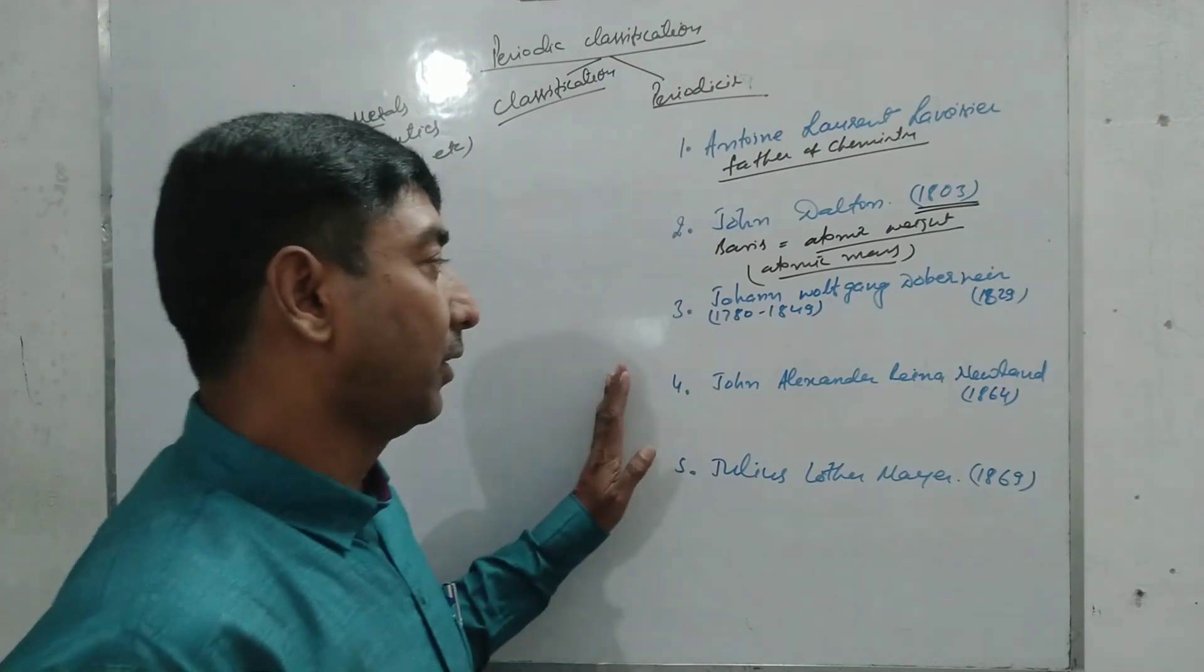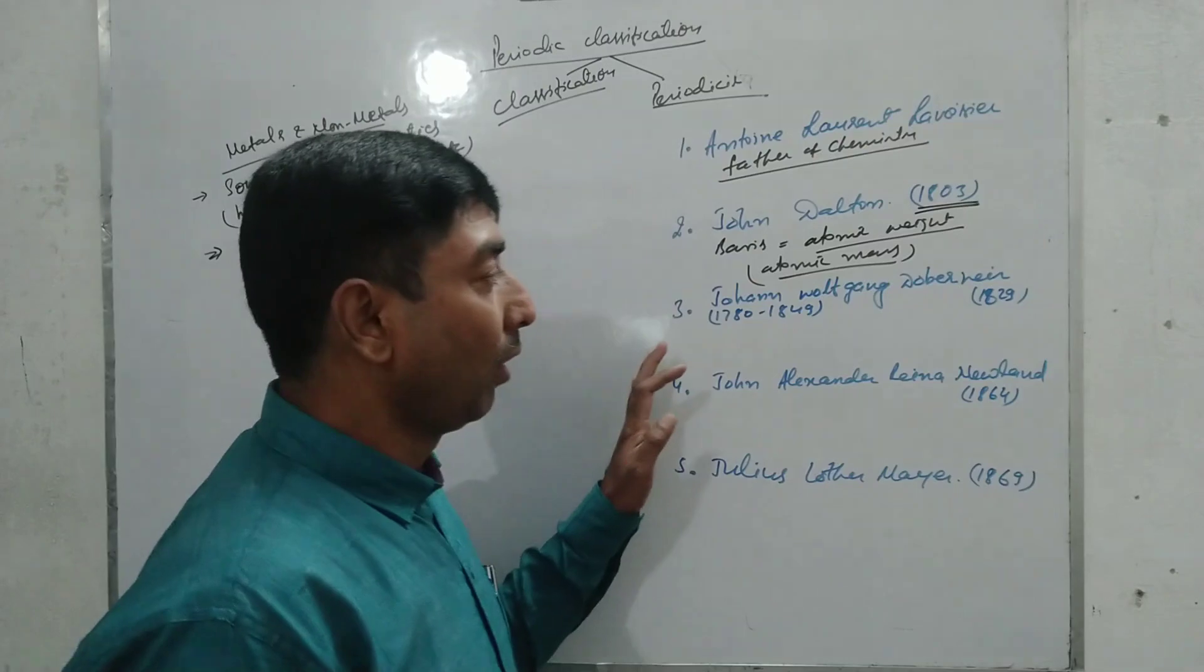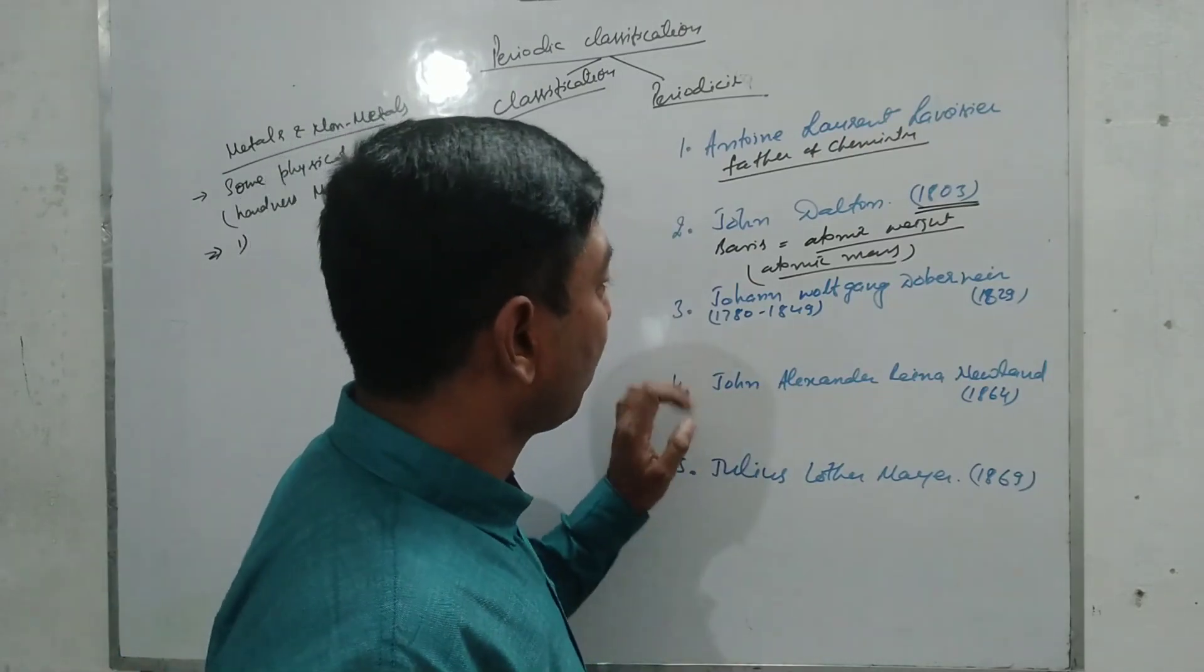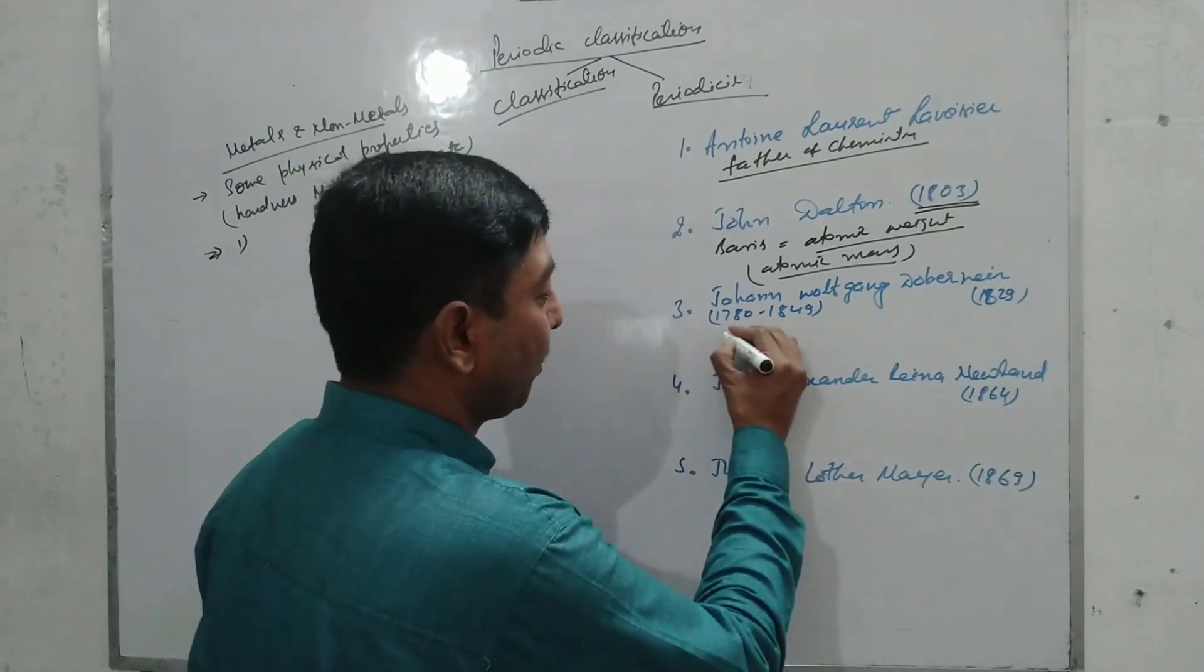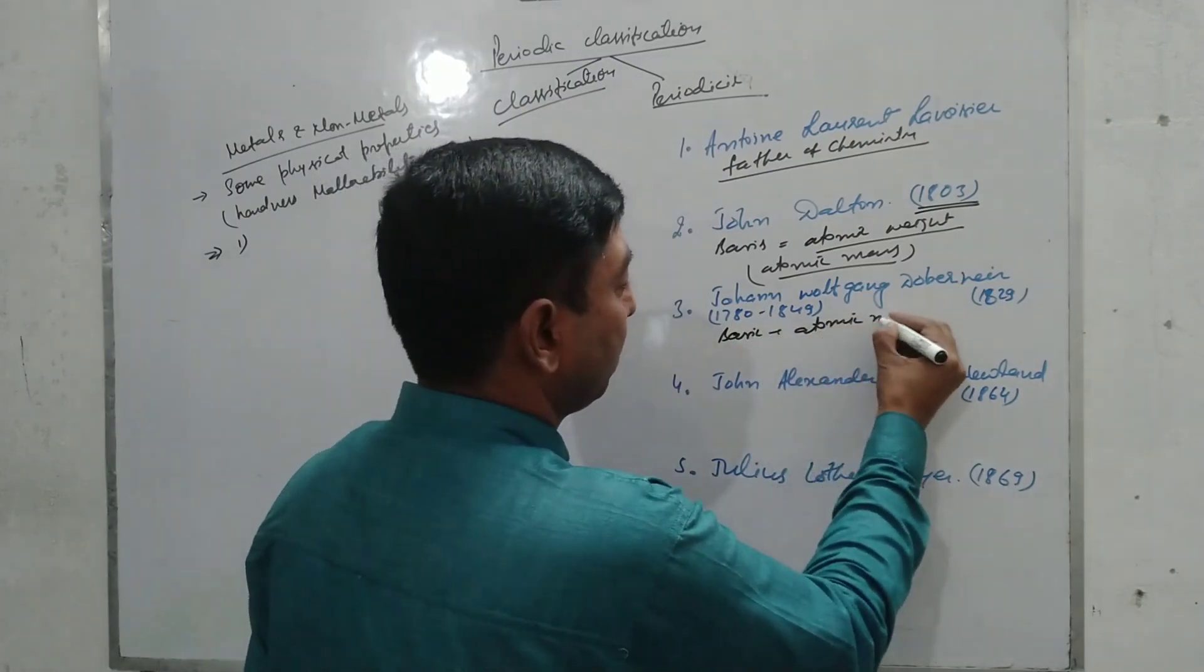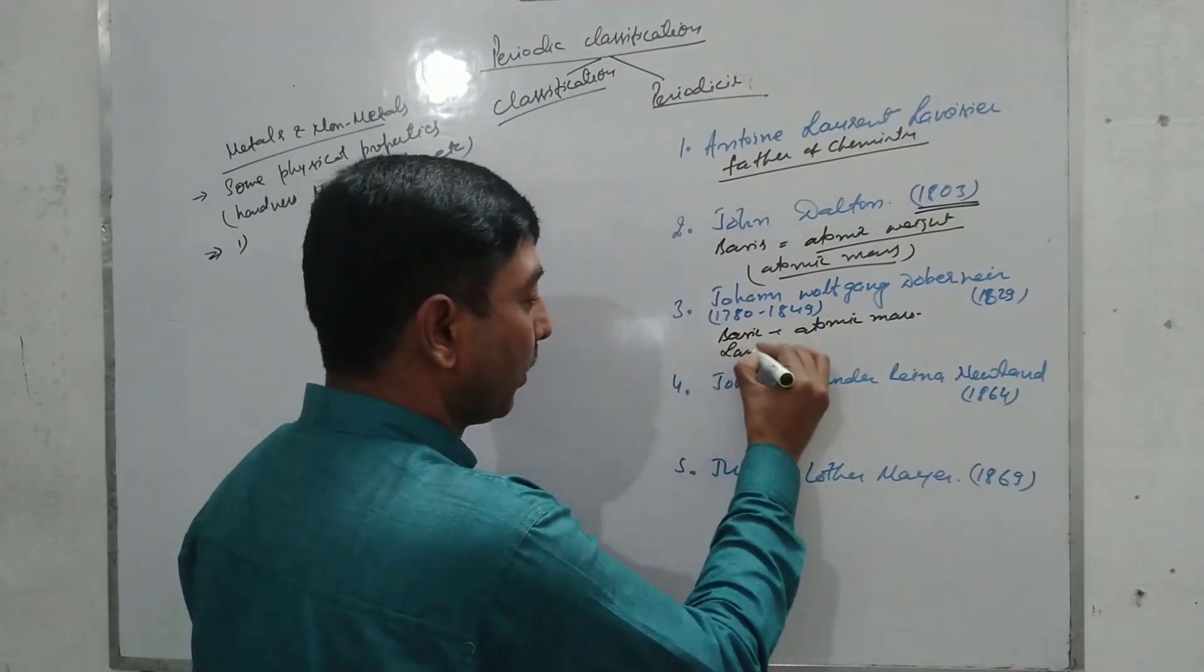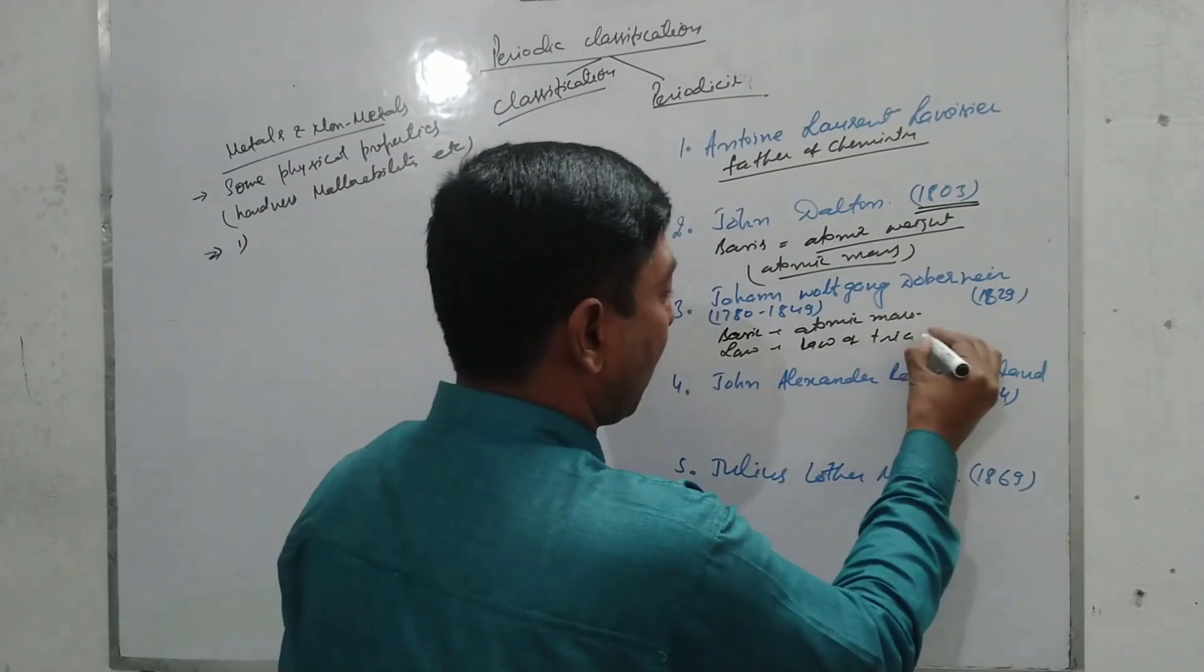Now the third scientist who classified the elements was John Wolfgang Döbereiner. He was a German scientist. He classified elements on the basis of atomic mass. He formulated a law known as law of triads.